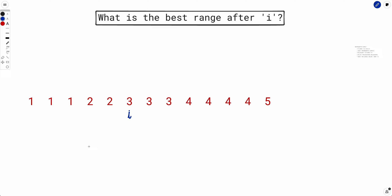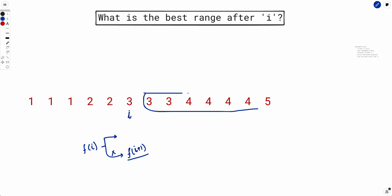Let's write down the recursion. f(i) = the best range after index i. There are two choices: either we start the range at i or we don't. If we don't start at i, the value is f(i+1). If we do start at i, we can find the length of the range by binary search. We take the maximum of both cases, and that gives us f(i).